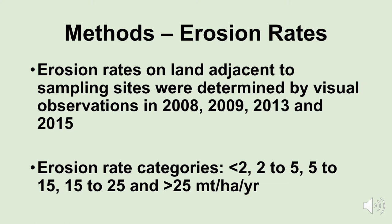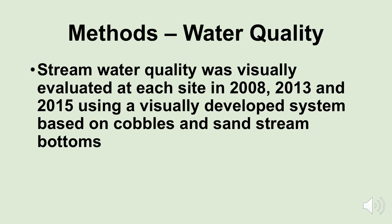Stream water quality was also visually evaluated at each site. After we took our benthic macroinvertebrate samples we had a visually developed system based on looking at the water, looking at the cobbles in the bottom of the stream, and looking at the sand in the bottom of the stream. The higher the percent cobbles the better the water quality, the higher the percent sand the poorer the water quality. We also looked at turbidity of the water and came up with a water quality index.